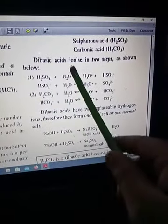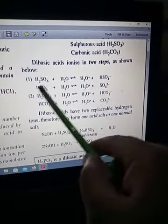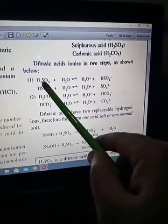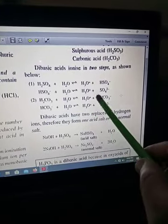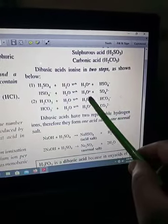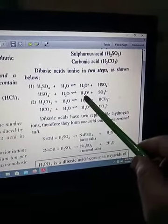When you dissolve it in water, it will ionize and produce two H+ ions because sulfuric acid has two H+. Similarly, carbonic acid also has two H+. So the basicity is two, or we call it dibasic acid.